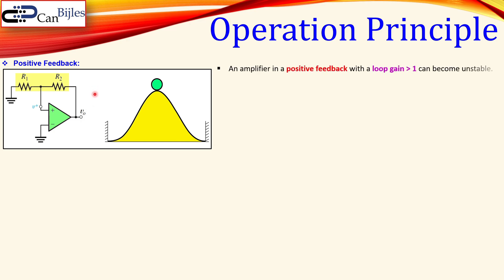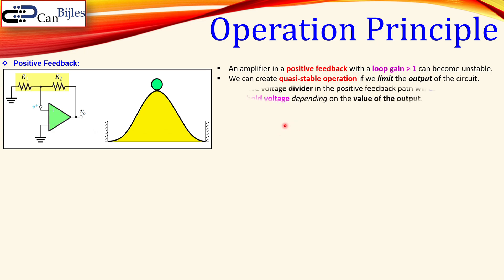This is also called the bi-stable situation. Now if you have an amplifier with a positive feedback as shown here and the loop gain is larger than one, this circuit can be unstable, but we can create a quasi-stable operation if we limit the outputs. We will have two states which are still stable. The resistor values create a voltage division by the voltage divider rule, establishing what we call the threshold voltage, which depends on the output voltage.